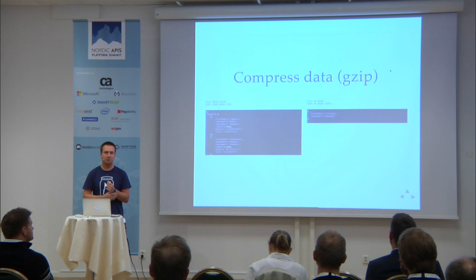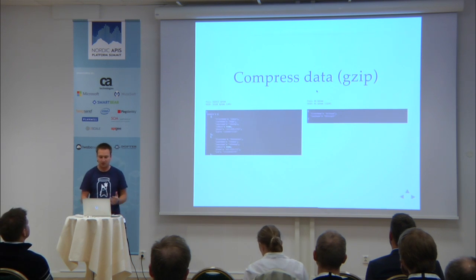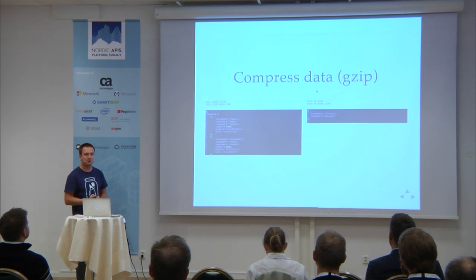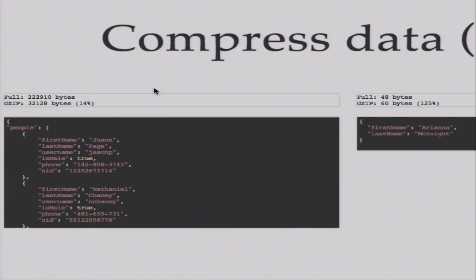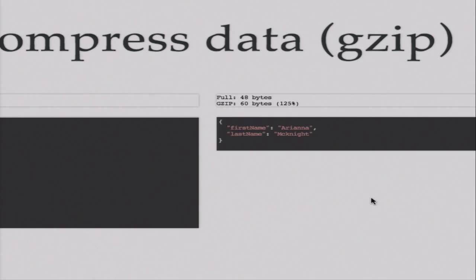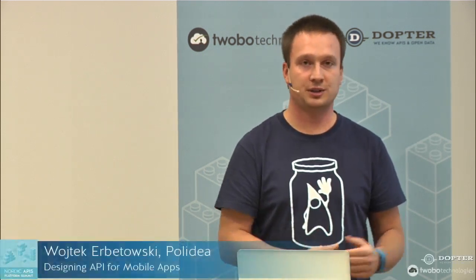A very important part is to compress data. Not many APIs actually support Gzip, and it's something that is supported on platforms, though not always out of the box. It works with clients provided by the system. For big messages, you can reduce the message size by up to 90% just by applying Gzip. The only reason not to use Gzip is when you have a lot of endpoints providing a very small amount of data — then it can actually grow the payload and cost you additional computation time.